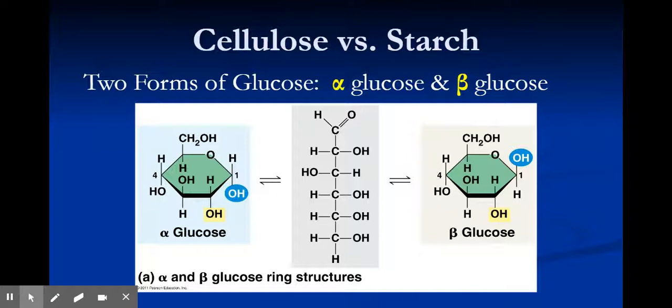We can identify the differences between these two by using some of the Greek letters. The funky-looking A would be alpha, and then the B would be beta. We can say either alpha glucose, which has the OH in the downward position, or beta glucose, in which the OH is in an upward position.